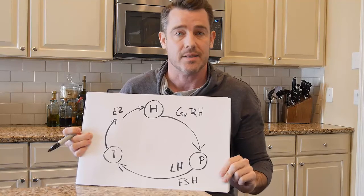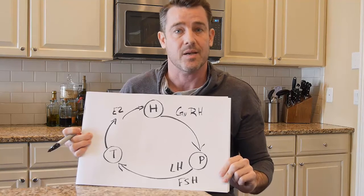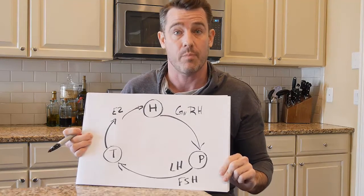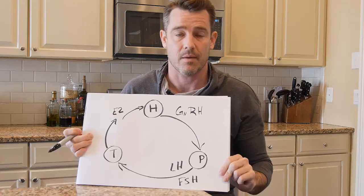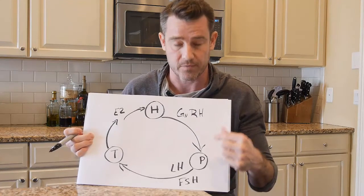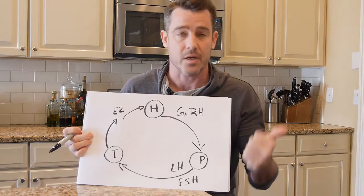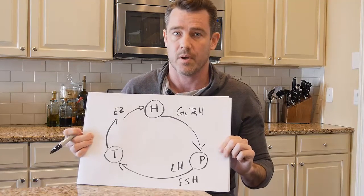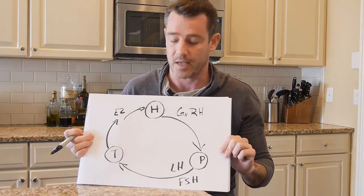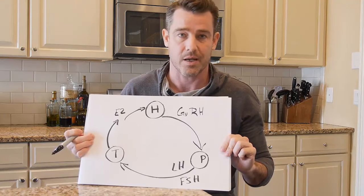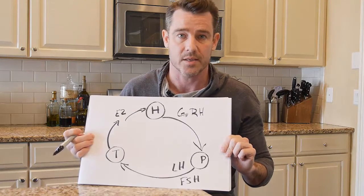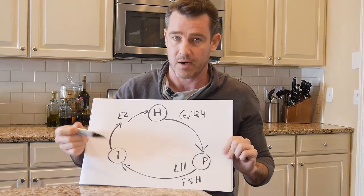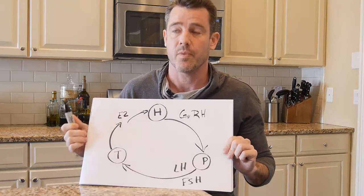There are a lot of things that can cause secondary hypogonadism. Anti-anxiety meds and anti-depression meds are big causes. Drinking too much alcohol and certain drugs are also big causes of secondary hypogonadism.